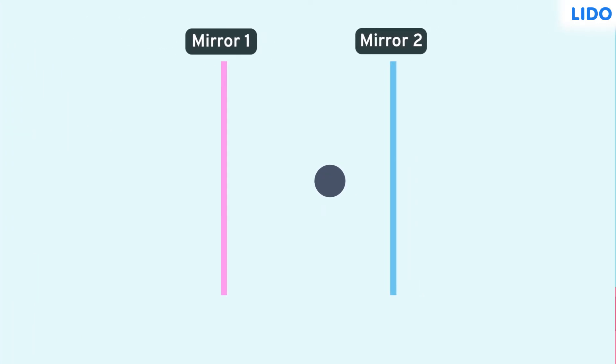She said, now consider the image formed by the pink mirror is image 1. The image formed by the blue mirror is image 2. This was pretty simple, right?